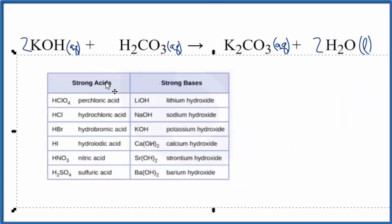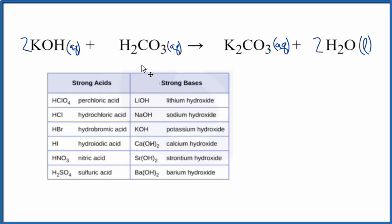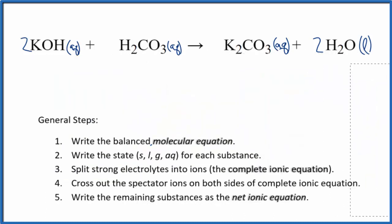You might want to memorize a table like this. These are the common weak and strong acids and bases. We see KOH right here. Potassium hydroxide is a strong base, but you don't see this carbonic acid here. So it's not a strong acid, it's a weak acid. We know it's an acid. There's an H in front. So we have our states.